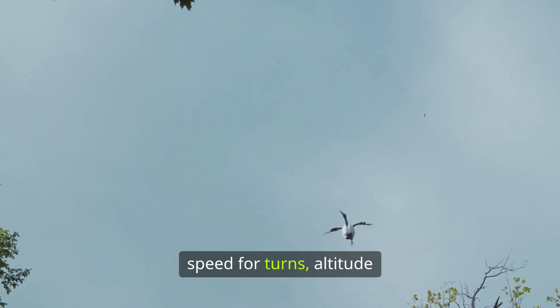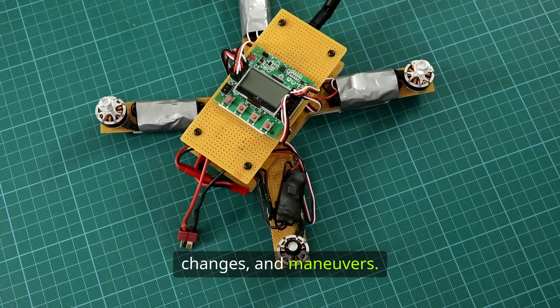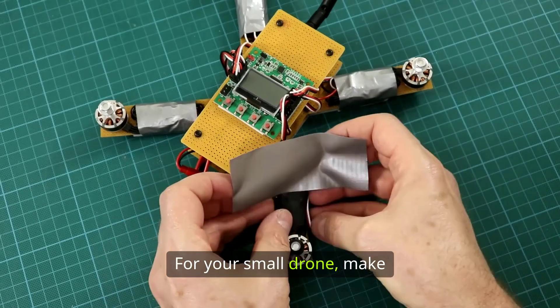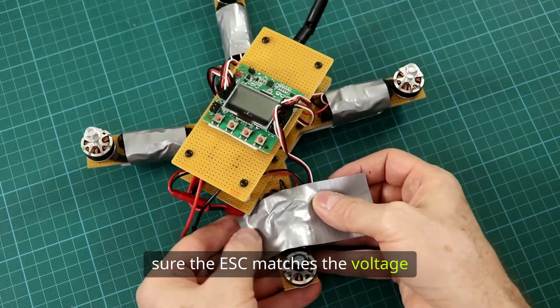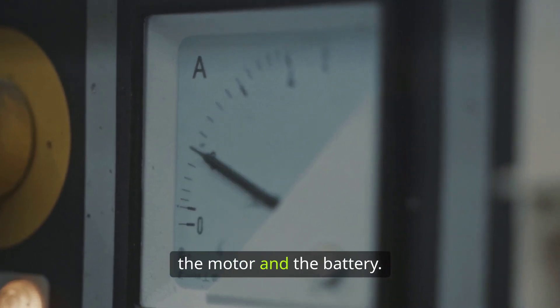adjusting the speed for turns, altitude changes and maneuvers. For your small drone, make sure the ESC matches the voltage and current ratings of both the motor and the battery.